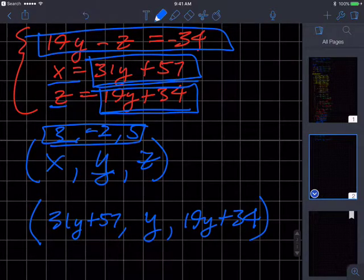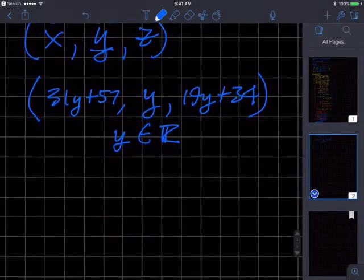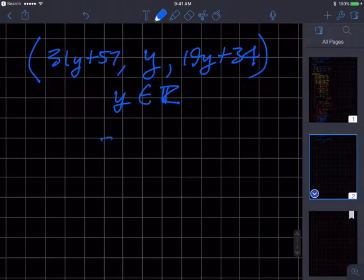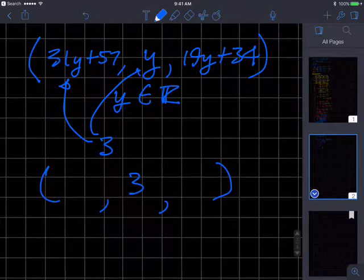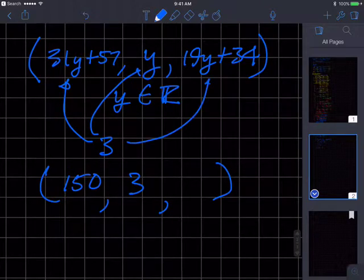And that's for all y's in the real numbers. So in other words, y can be any real number. And when I choose the y, let's say 3, I'll put 3 in for y. And so a solution for this would be 3. And then if I put 3 in for it, if I put 3 into y for the x value, I get 3 times 31, which is 93, plus 57, which is 150. And if I put 3 in for y over here, I get 3 times 19, which is 3 times 20 minus 3, is 57, plus 34 is 80, 91. And so when y is equal to 3, x is equal to 150, z is equal to 91. That's one solution.